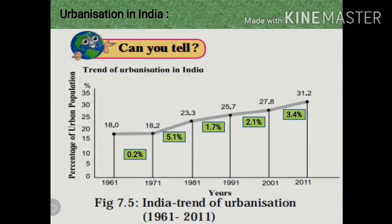Let's discuss urbanization in India. The level of urbanization is measured in terms of the percentage of urban population to total population. Given in your textbook on page number 48, figure 7.5, it shows the trend of urbanization in India from the year 1961 to 2011. From this graph you can find the rate of urbanization over this period.